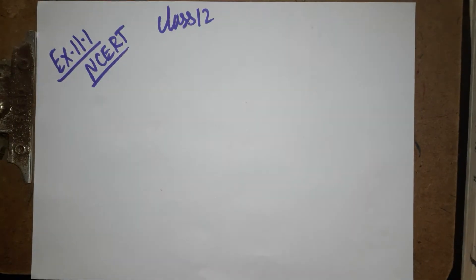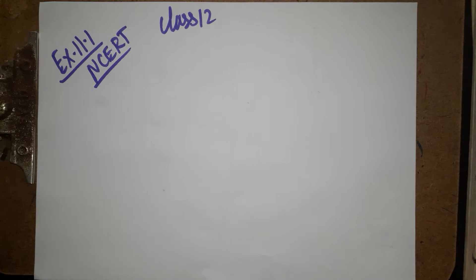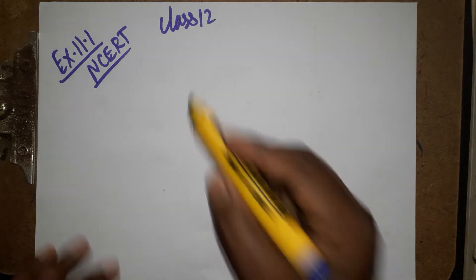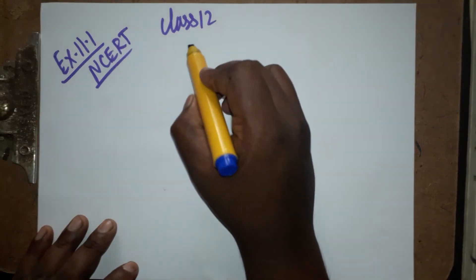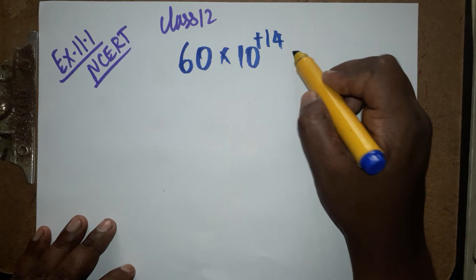Today we are going to learn Class 12 NCERT example problem 11.1, which is from the photoelectric effect. The problem is given in the question: it is 60 into 10 power plus 14 hertz.